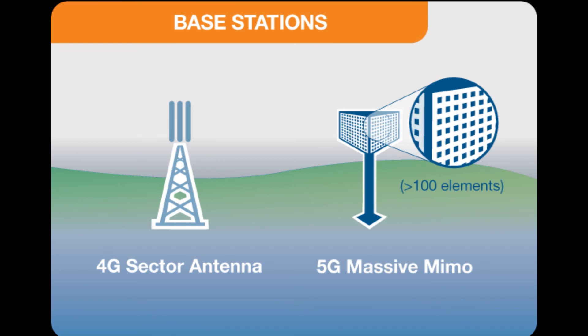The overall physical size of the 5G massive MIMO antennas will be similar to 4G. However, with a higher frequency, the individual antenna element size is smaller, allowing more elements — in excess of 100 — in the same physical case.